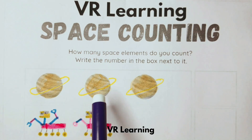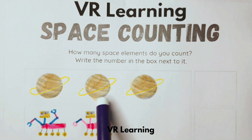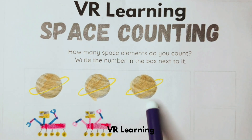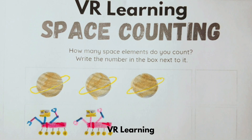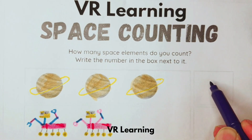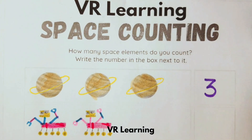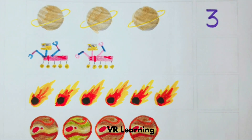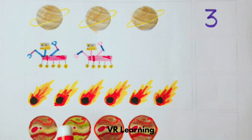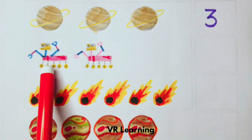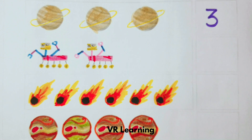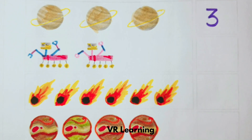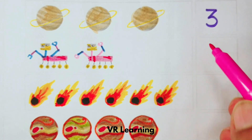One, two, three. Write the number three in the box. One, two. Write the number two in the box.